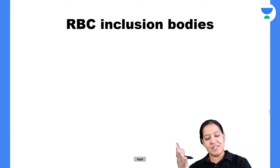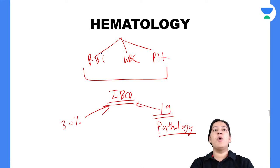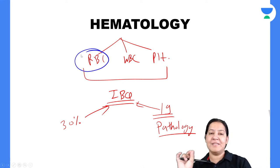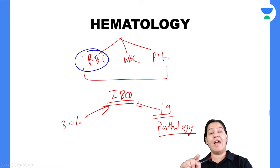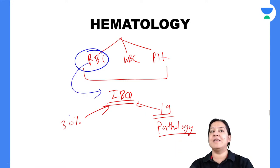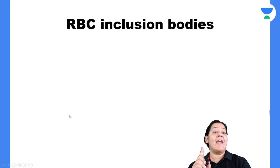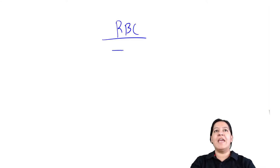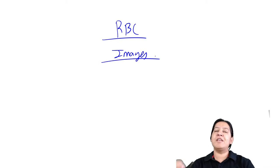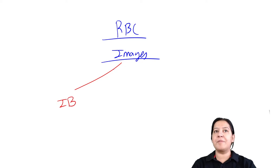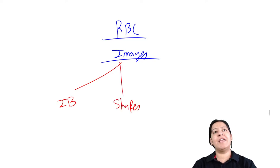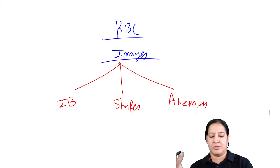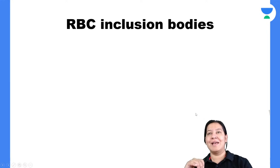Today I'm teaching RBC disorder images. Before anemia, I need to cover two key areas: number one, RBC inclusion bodies; number two, RBC shapes; and third, anemia itself. The examiner can frame questions on inclusion bodies, the various shapes of the RBC, and of course the various anemias.